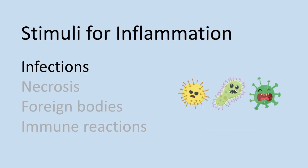So what is your body going to recognize as an offending agent — what is going to stimulate the inflammation? First, infections — things like bacterial, viral, fungal, or parasitic microbes, as well as microbial toxins. Depending on what type of infection you get there is often a slightly different inflammatory response, ranging from a mild acute inflammation with little to no lasting damage, to a more severe systemic reaction like sepsis which can be fatal, or a prolonged chronic inflammation which can lead to extensive tissue injury and has a high rate of morbidity and mortality.